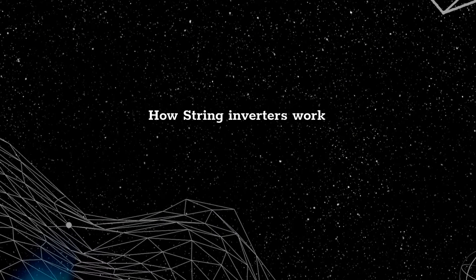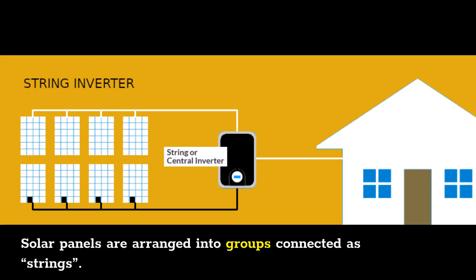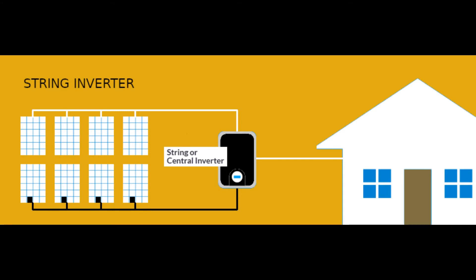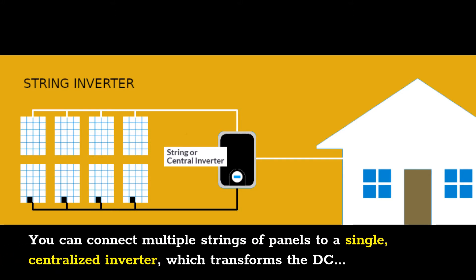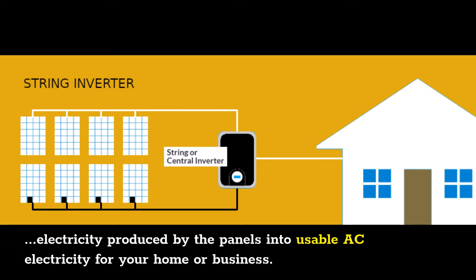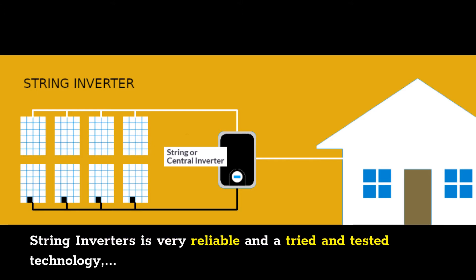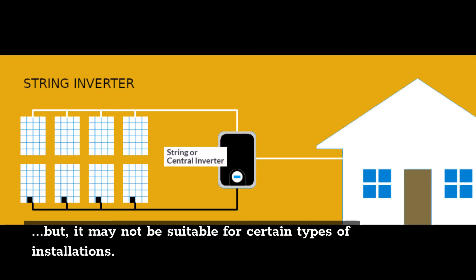How String Inverters Work: Solar panels are arranged into groups connected as strings. You can connect multiple strings of panels to a single, centralized inverter, which transforms the DC electricity produced by the panels into usable AC electricity for your home or business. String Inverters are very reliable and a tried-and-tested technology, but they may not be suitable for certain types of installations.